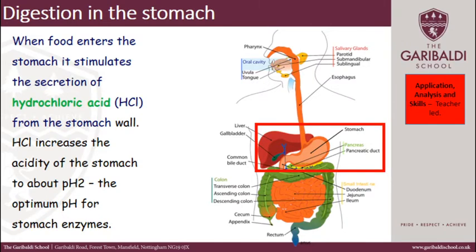Now we're moving on to digestion in the stomach. When food enters the stomach it stimulates the secretion of hydrochloric acid from the stomach wall. Food comes down the oesophagus and goes into the stomach — this is a very acidic environment. Hydrochloric acid is actually pH 2, and this is the optimum pH for the enzymes in the stomach, meaning it is the pH at which they work best — they are most efficient at pH 2.